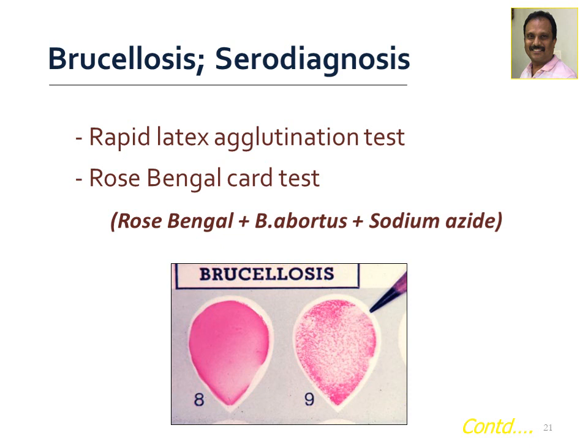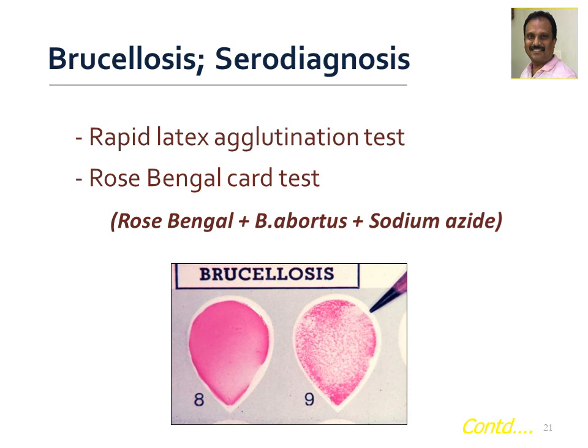Radiological diagnosis: on X-ray you can see erosion of the anterior superior corner of the lumbar vertebra, shown by yellow arrows, along with marked osteophytosis — osteophytes appearing like knobs just below the arrow head. This X-ray finding is known as the Pedro-Pons sign, seen in brucellosis of the bone or joints.